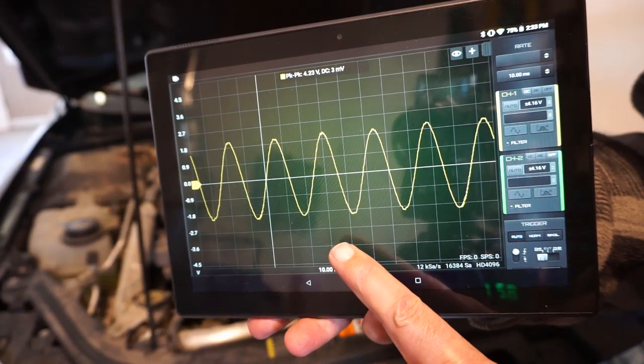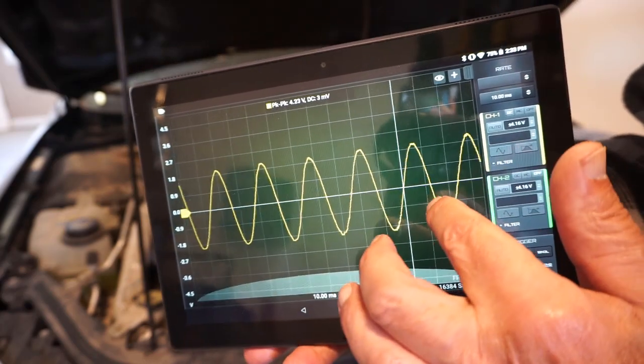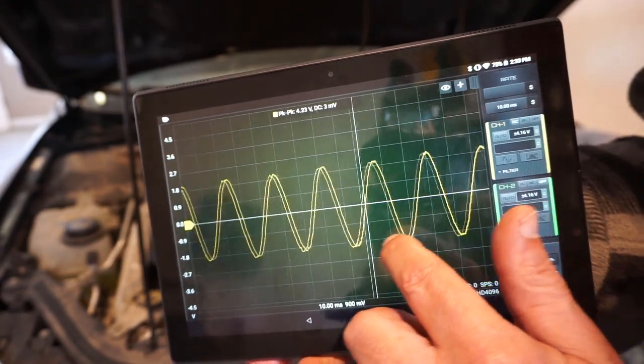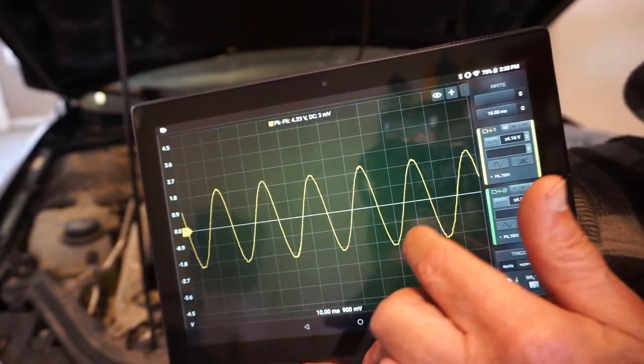So pretty much the same as the DIY transducer right? That's a good waveform. Pretty much the same plus and minus 2 volt peak to peak sine waveform.